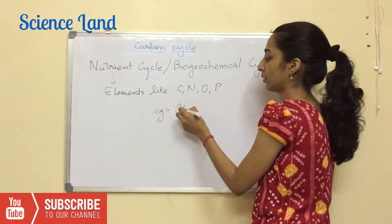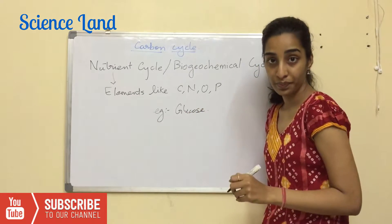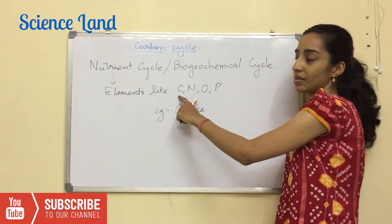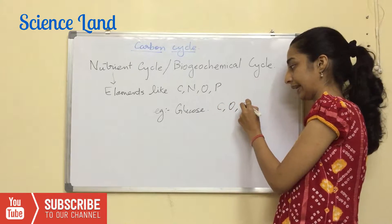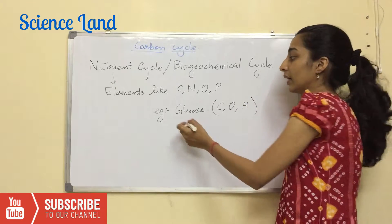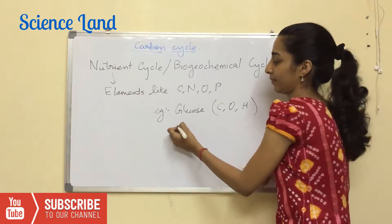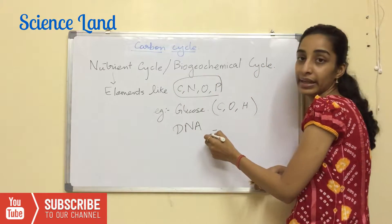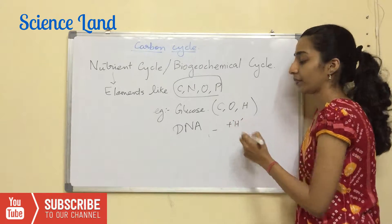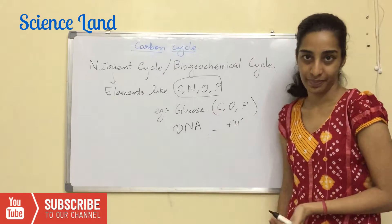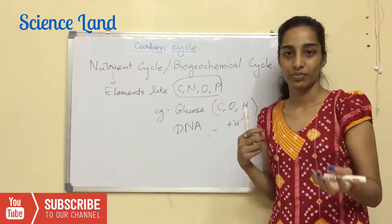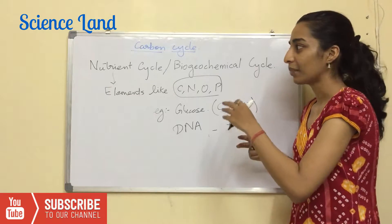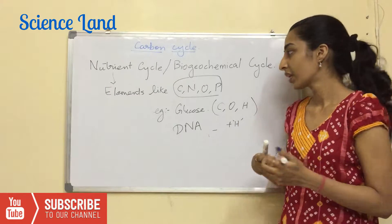For example, a molecule called glucose has two key nutrients: carbon, oxygen, and hydrogen. Another example is DNA — it has all five elements including hydrogen. Glucose will further combine to give you your daily food, and DNA is the main actor in a cell.